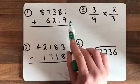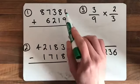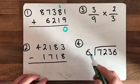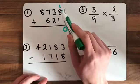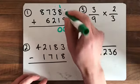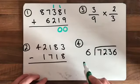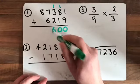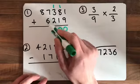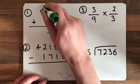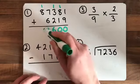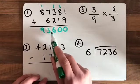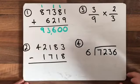Remember we start from the right-hand side. Nine add one is ten, zero goes down, one gets carried over. Then eight add one add one is ten, zero, carry the one. Three add two add one is six. Seven add six is thirteen, put the three carry the one. Eight add one is nine. Remembering the comma three from the end: ninety-three thousand, six hundred.